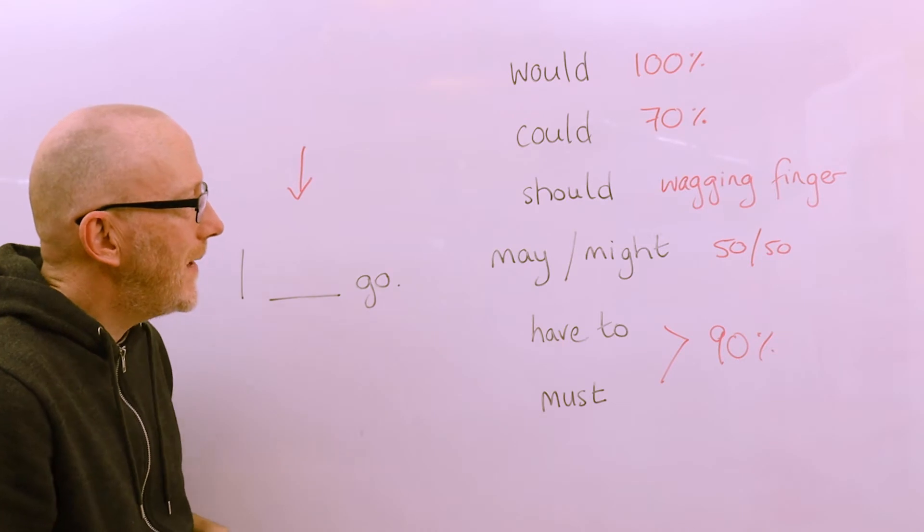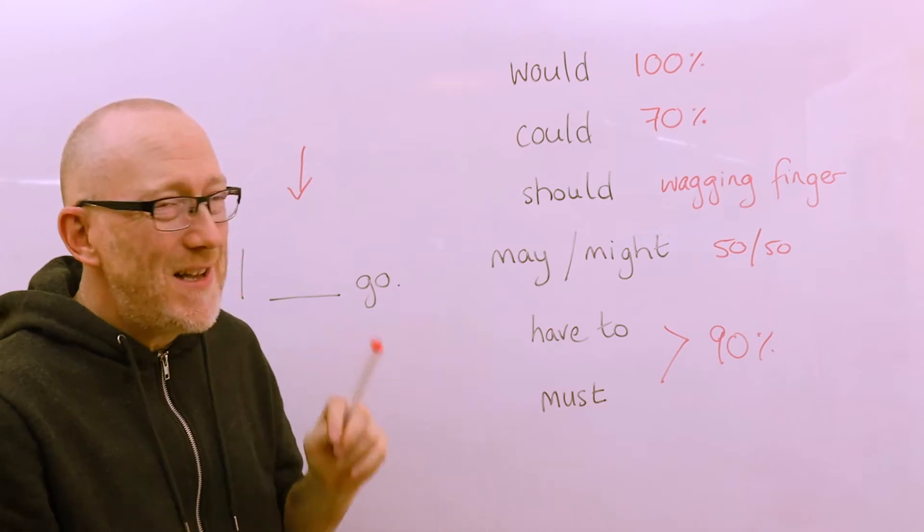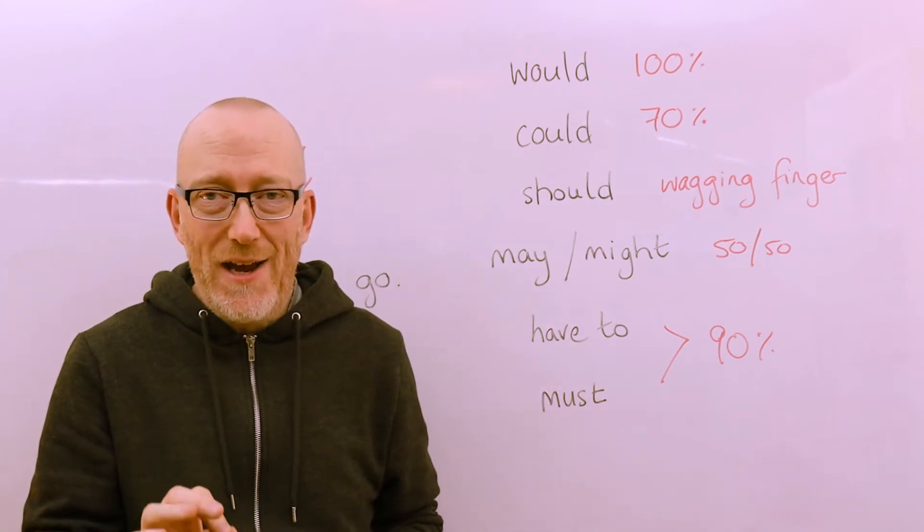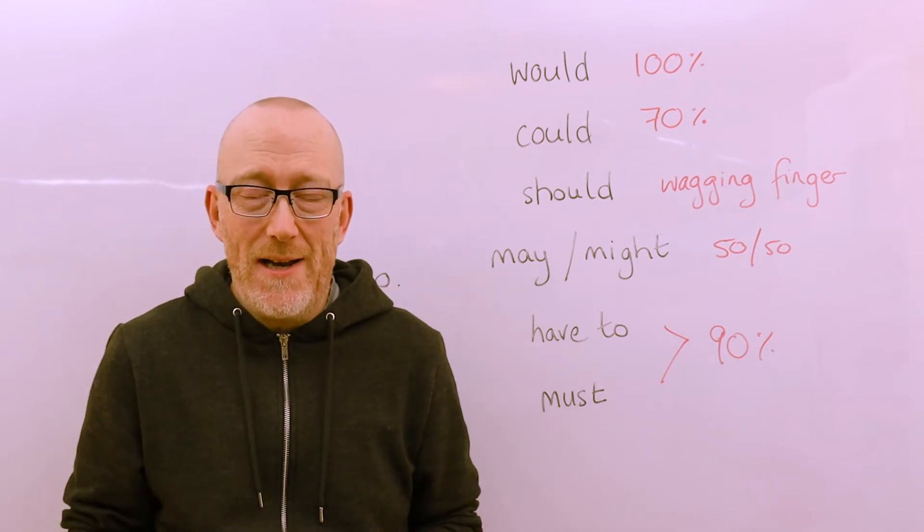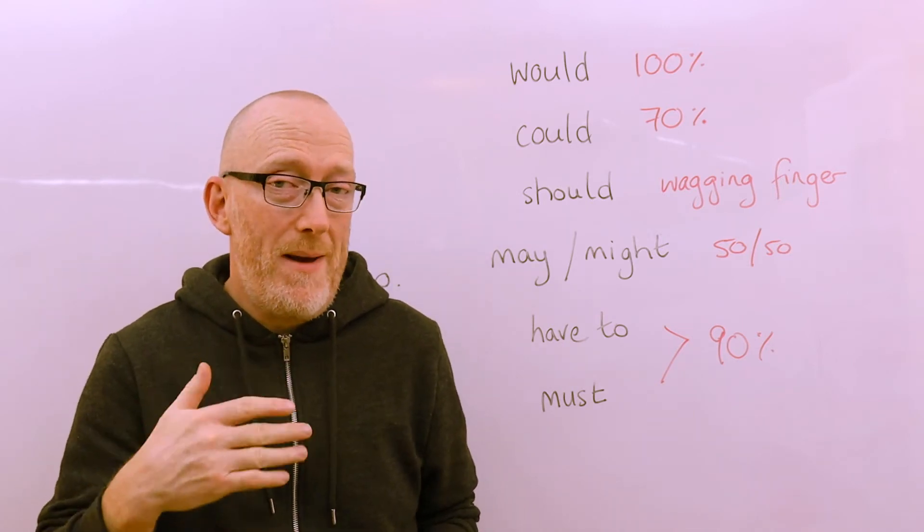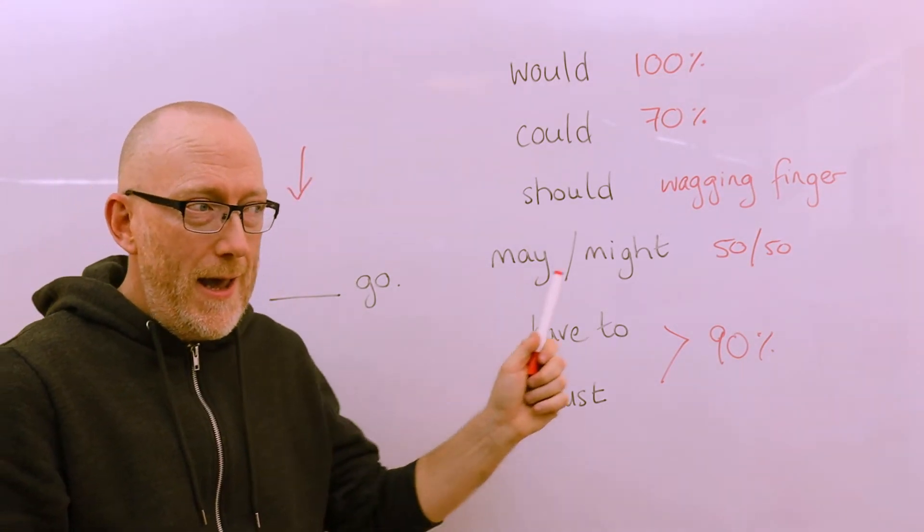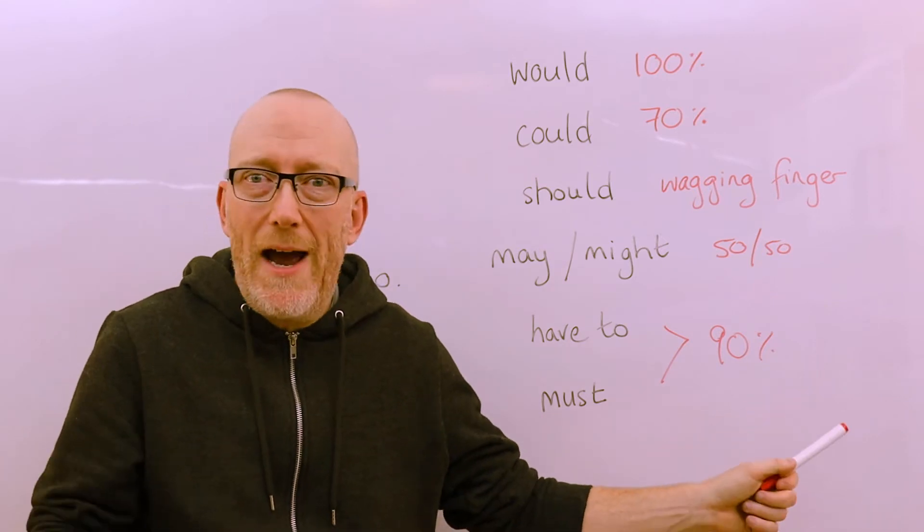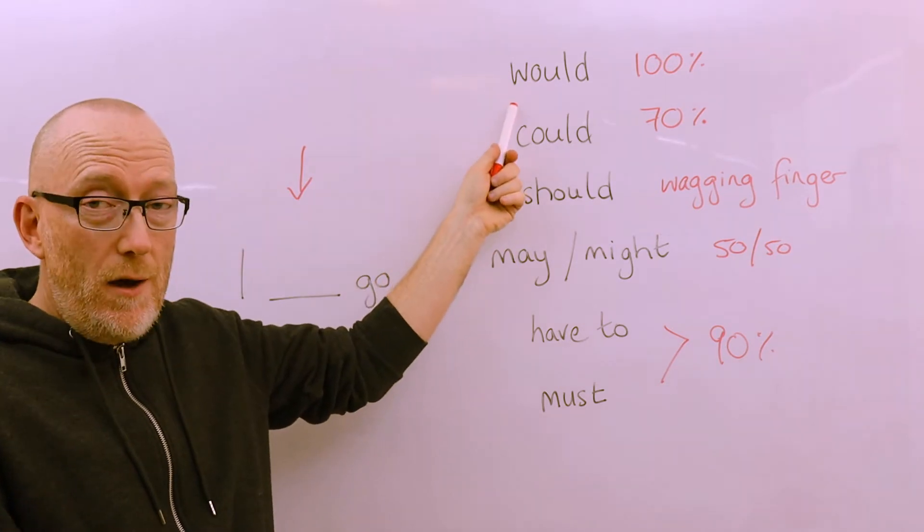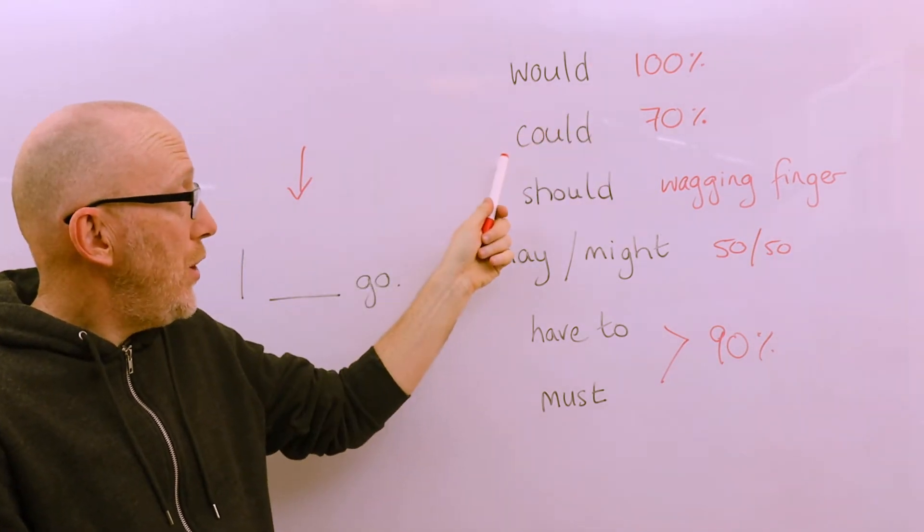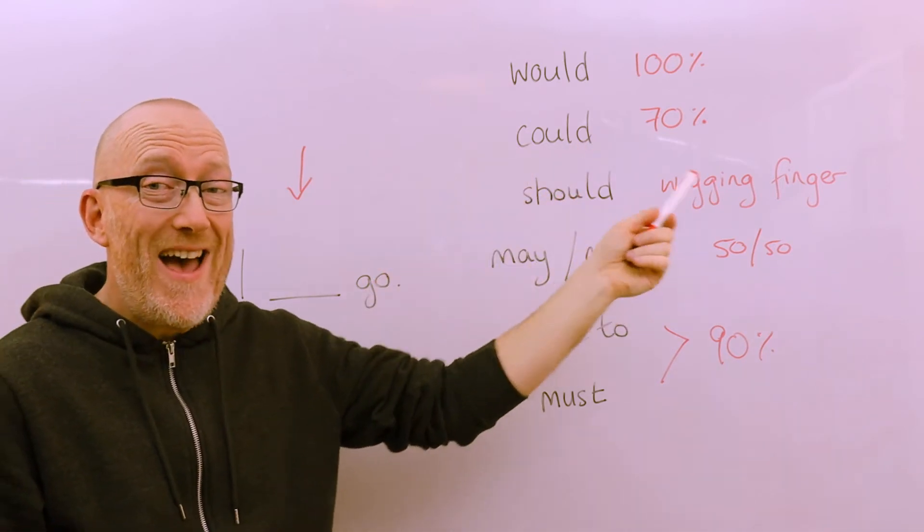Excellent. So that does bring us next to could. Could is not as 100% accurate as would. Would is 100%, could is kind of 70%. There are some circumstances that may stop you from going to the party. So I could go if I have the time. You may not be sure that you have the time. You would like to go 100% but you might only be able to go if you have the time. So I would go, but I could go if I have the time.